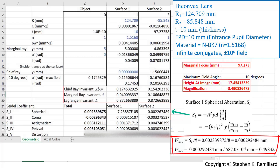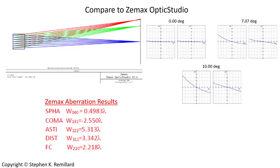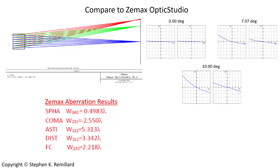W sub 040 is often reported in waves: divide by the wavelength. This is monochromatic aberration — chromatic aberration is not considered here. Using the D line at 587 nanometers, you get 0.4983 waves, written as 0.4983 lambda. Verified in Zemax with the same lens: the ray fan plots confirm spherical aberration is present, and Zemax computes 0.4983 waves for W sub 040 — matching the spreadsheet result exactly. In future videos we'll look at coma, astigmatism, distortion, and field curvature.